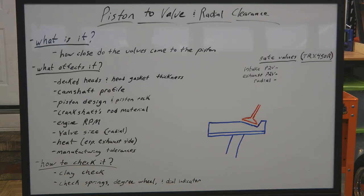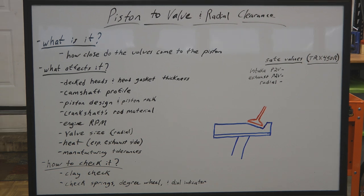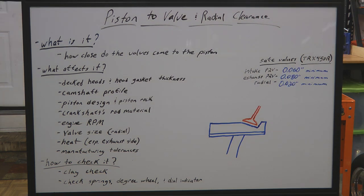First let's talk about what piston to valve and radial clearance actually is. Technically, it's how close the valves come to the piston during engine operation. When the engine is running, the piston is moving up and down in the cylinder, and in conjunction, the cam is rotating and opening the intake and exhaust valves. What we're interested in is how close the valves actually come to the piston.